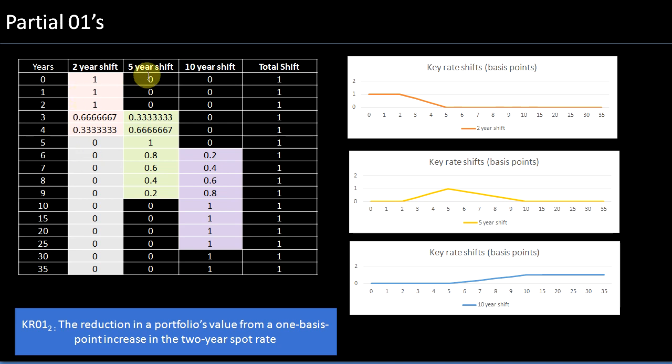In a typical financial institution such as a bank, there could be around 10 or even 15 different key rates. The more key rates you have, the more effective your hedge will be. You don't have to use two-year, five-year, and ten-year key rates — you could use three years, seven years, fifteen years. It depends on the firm and how they see interest rates move, as well as their hedge policies and profiles.